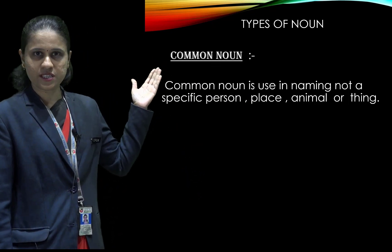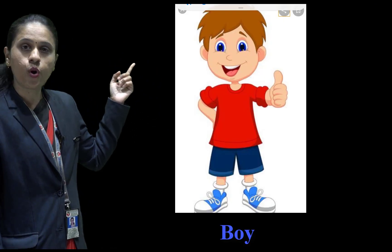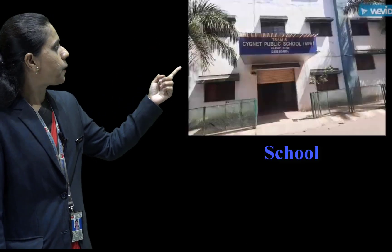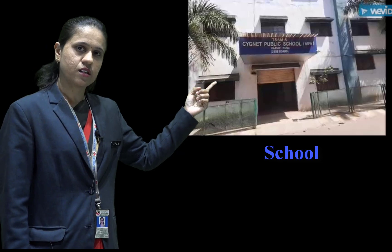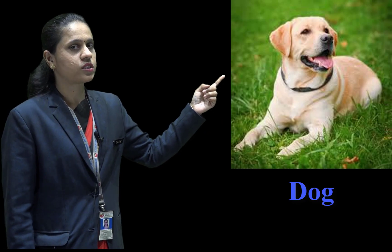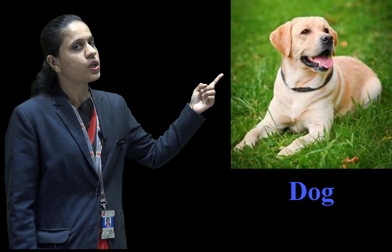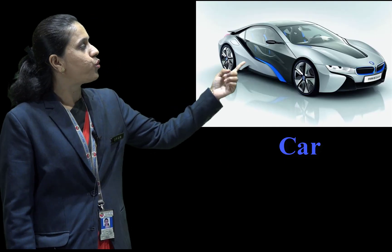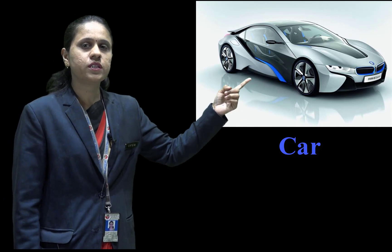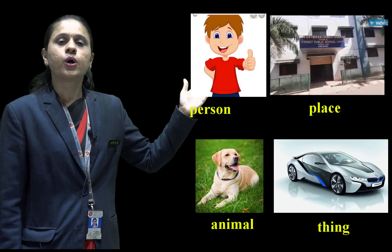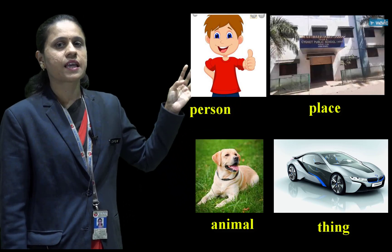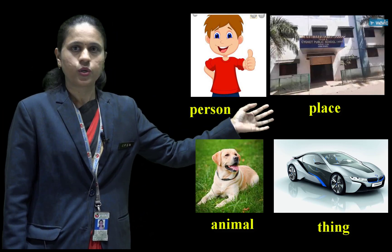See, this is the first example: Boy. Boy is a common noun. The next one is school. School is also a common noun. The third one is dog. Dog is also a common noun. And the fourth one is car. Car is also a common noun. These all are common nouns of a specific person, place, animal and thing.